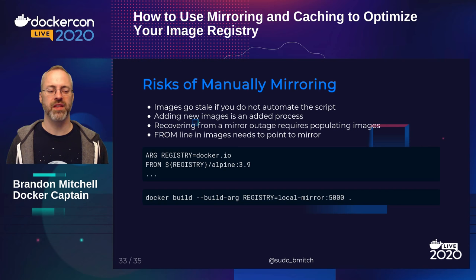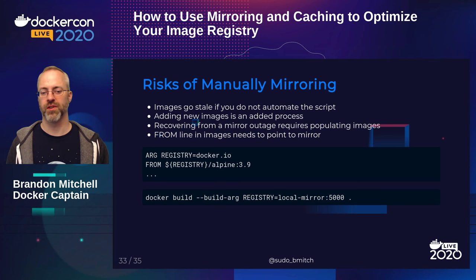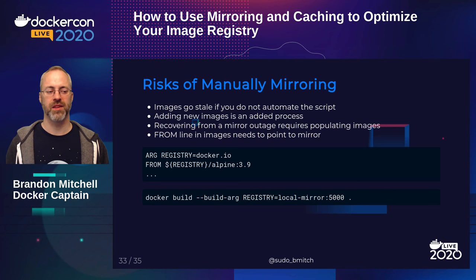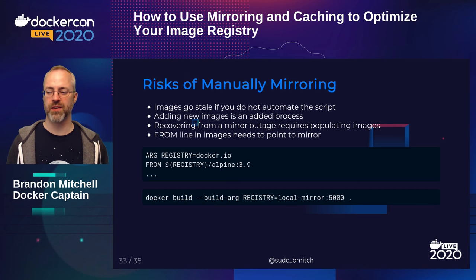When changing the registry name, make it a variable. In a Dockerfile, specify a build arg initialized to docker.io so it defaults to Docker Hub for anyone without access to your mirror. Your local build environment just passes the build arg override. The same variable technique applies in Docker Compose files and on the command line.